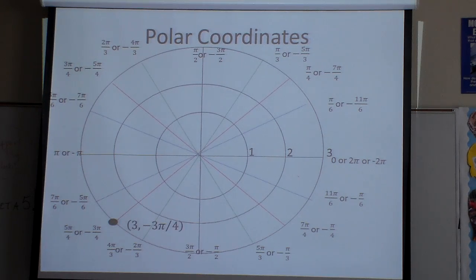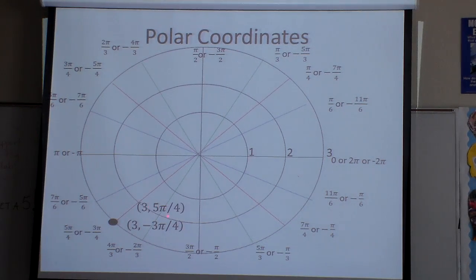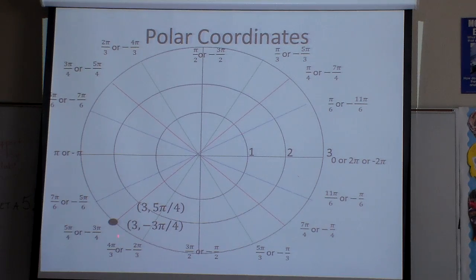Now that's the point there. How else could I write that? I could also write it as if I had gone around from the positive direction: 3, 5 pi over 4. The difference is whether I go this way around on the three circle or whether I go this way around. This one was negative, that one was positive, but that's the same place — I ended up at the same place with each one of these.